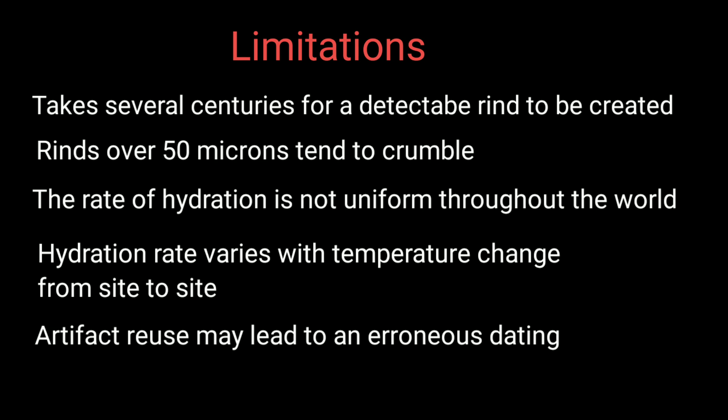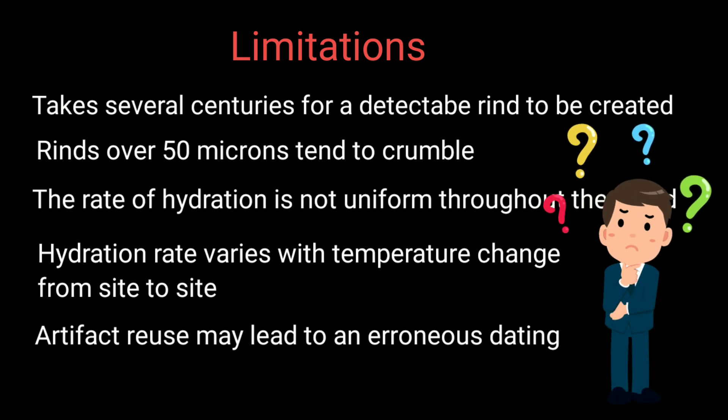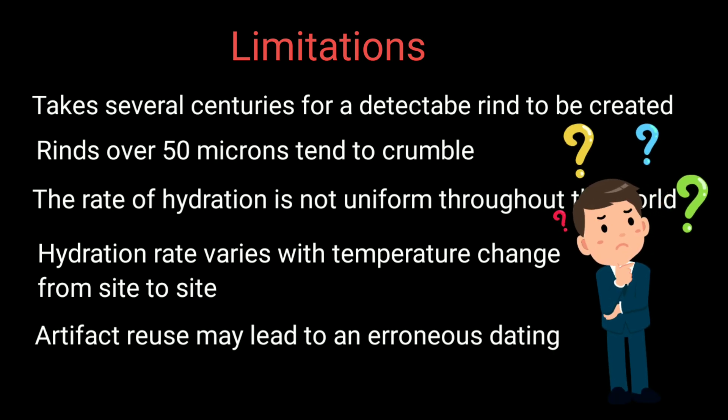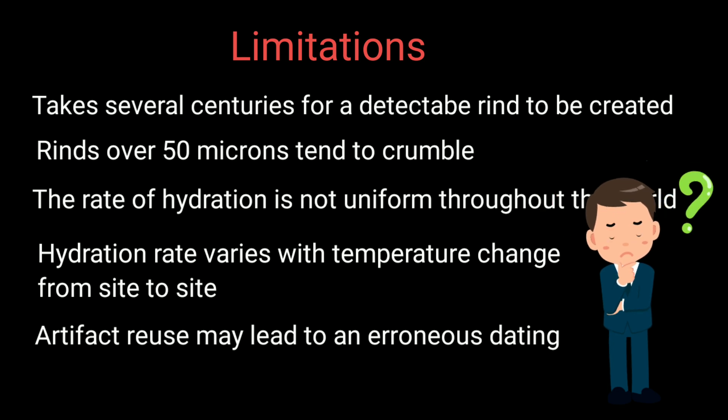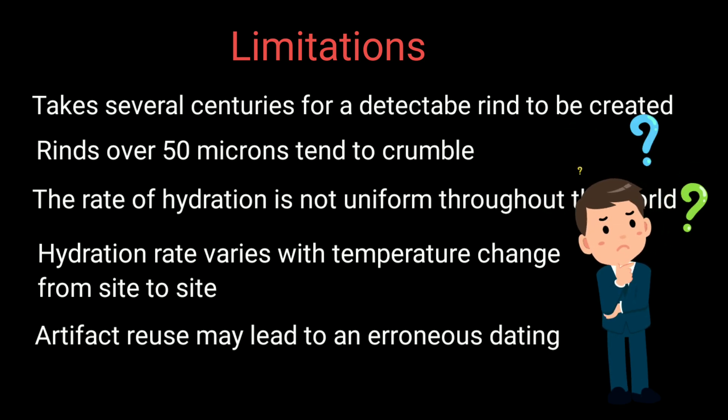Artifact reuse may also lead to error. For example, one person fashions a tool out of an obsidian nodule and uses it to skin a deer. Several hundred years later, a second person finds the tool, resharpens it, and uses it to shave the bark of a tree branch. The archaeologist would then be led to believe that arrow production started several hundred years earlier than what was actually expected.